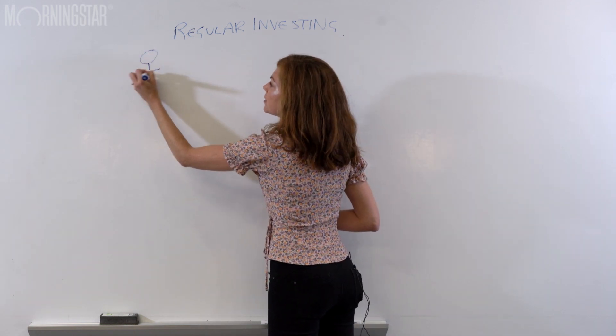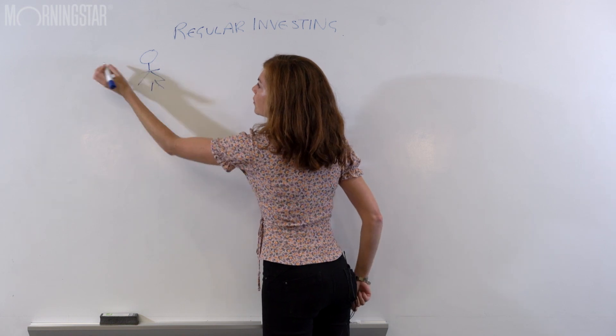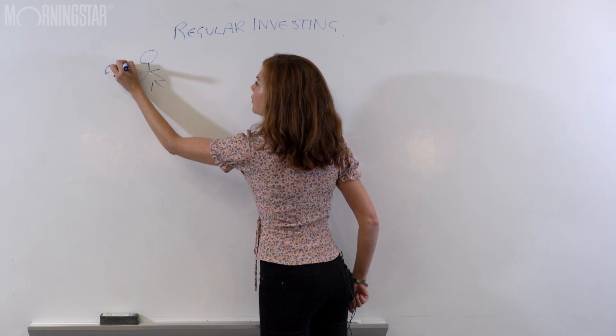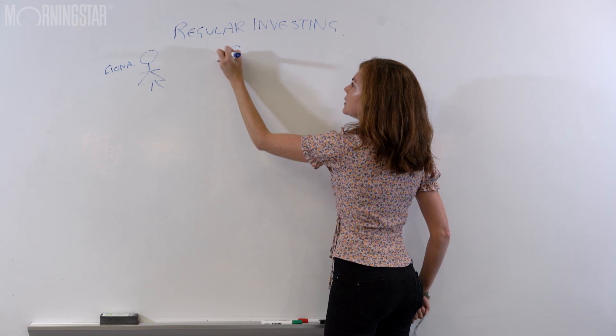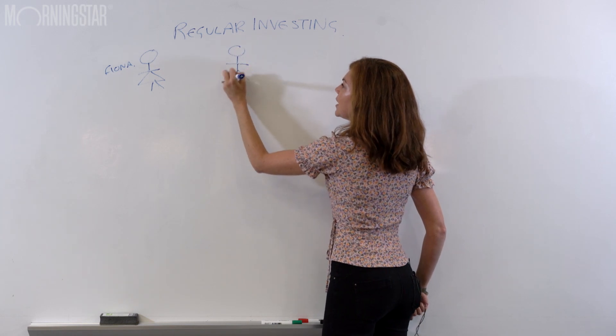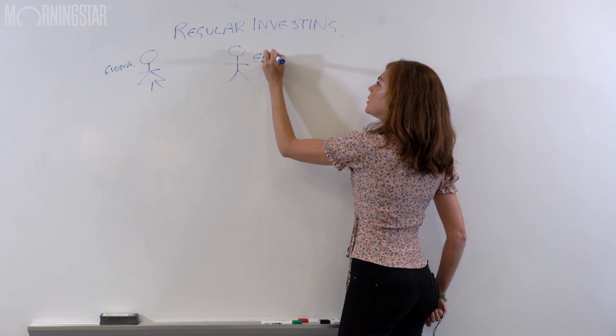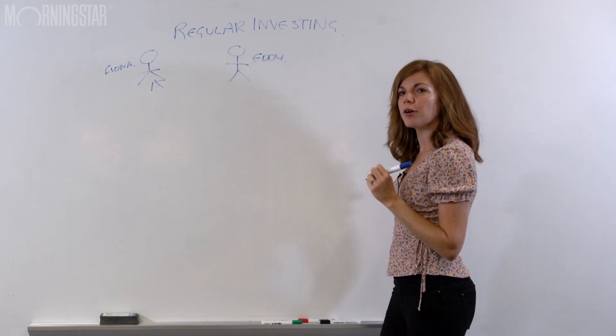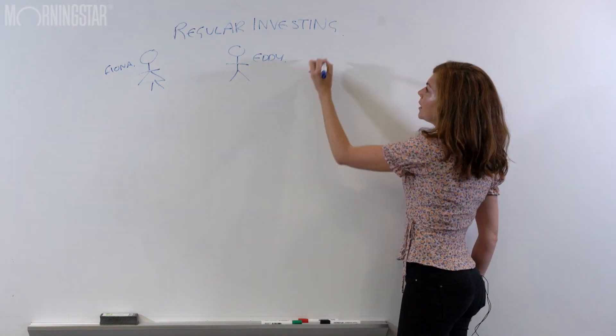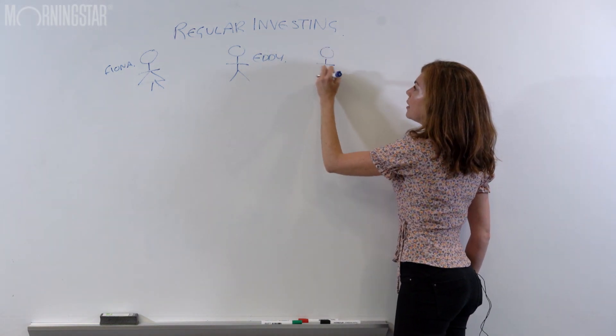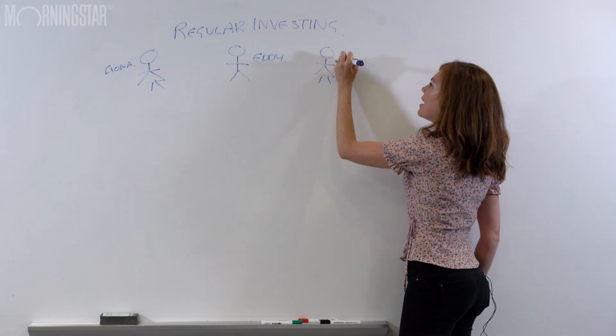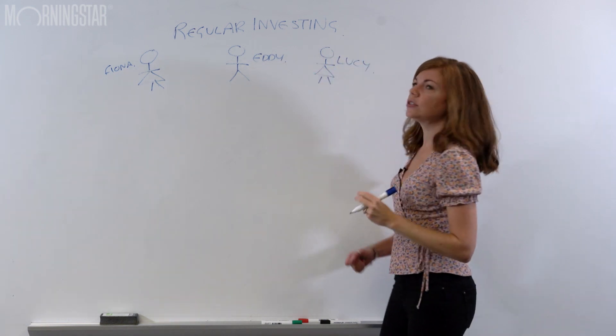We will have first thing Fiona. She is a nice early bird. She gets things done. We will have Steady Eddie who takes a steady approach to life. And let's have Last Minute Lucy who leaves everything, as you might have guessed, to the last minute.